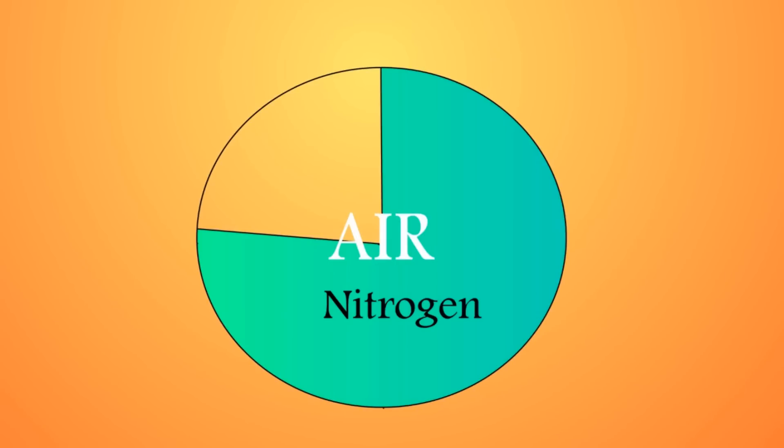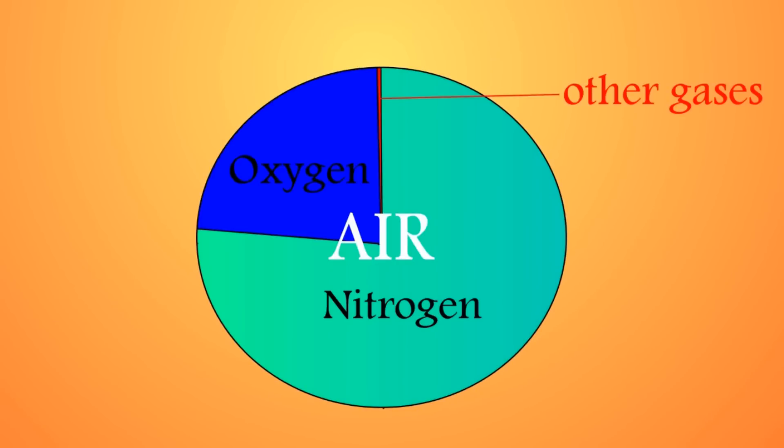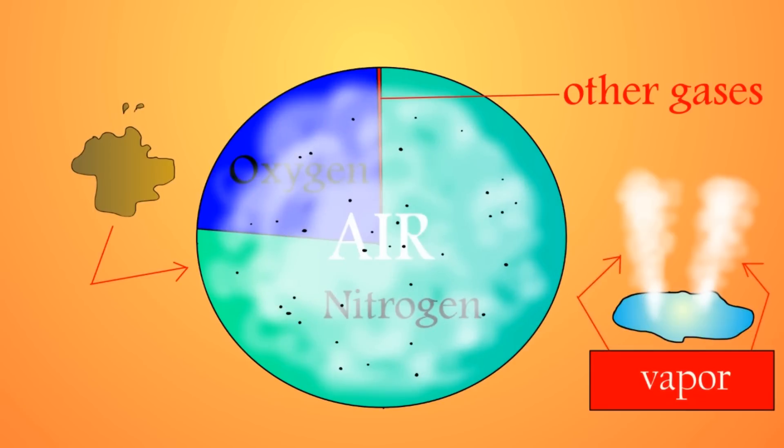Air is made up of 78% nitrogen, 21% oxygen, and trace other gases, but there's also a lot of other things in the air, like dirt and dust, but also a lot of water vapor.